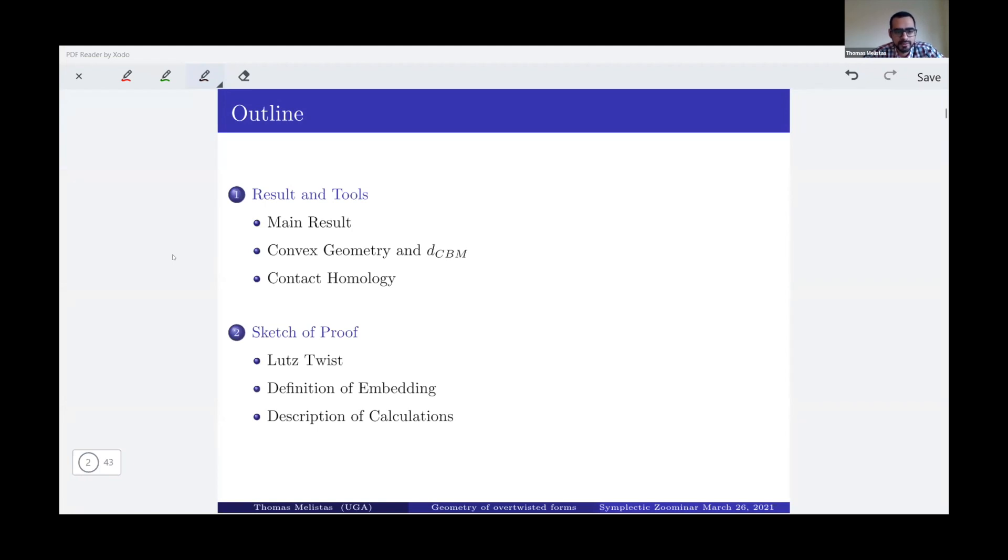First, the first portion of the talk will be about the main result, which is essentially a bi-Lipschitz embedding theorem for which we need a metric, a distance from the space of forms, which I'm going to define, first introducing and motivating the definition of this metric. Then I'm going to say what properties of contact homology are needed and then I'm going to sketch the proof of this main result, this bi-Lipschitz embedding theorem, by reminding you what is a large twist, defining the embedding, and then describing the calculations.